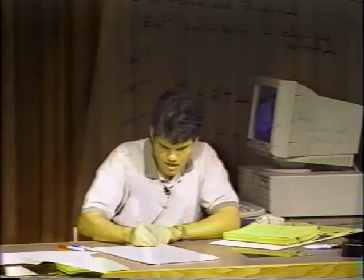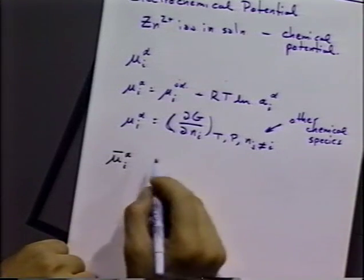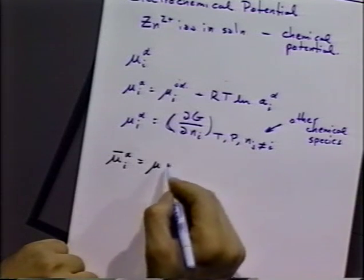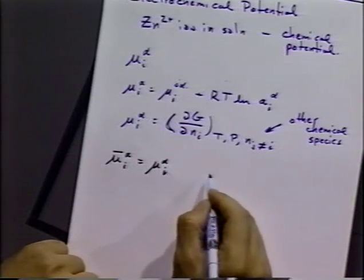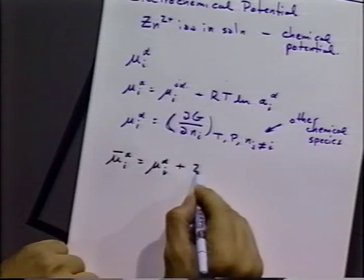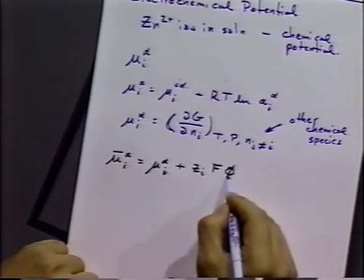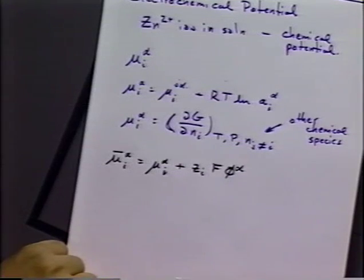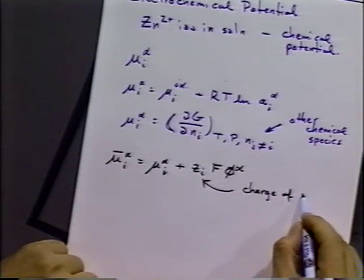To account for that fact, they come up with the so-called electrochemical potential. And the electrochemical potential is written the same way but with a bar over the top. So for species I in phase alpha, the electrochemical potential is equal to the chemical potential of species I in phase alpha, plus an electrostatic term, where Z is the charge and F is the Faraday, and phi sub alpha is the inner potential of our phase alpha.